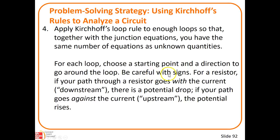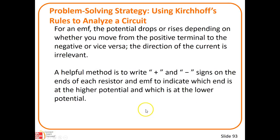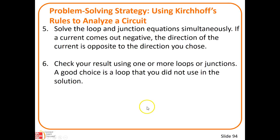You have to be careful with signs. For a resistor, if your path through the resistor goes with the current, there's a potential drop. If your path goes against the current, the potential goes up. This is a little more complicated — we're going to do only one problem with it and you won't be assigned any. A lot of different rules here: step five, you have to solve the loop and junction equations simultaneously.